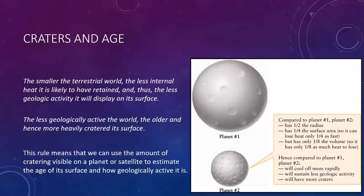We'll finish off this lecture with a couple slides discussing how we can relate cratering on a surface to the age of a planet. And this is quite fascinating. It turns out that the smaller the terrestrial world, the less internal heat it is likely to have retained, and thus the less geological activity it will display on its surface. The less geologically active the world, the older and hence more heavily cratered its surface. This rule means that we can use the amount of cratering visible on a planetary surface to estimate the age of its surface and how geologically active it is. This is a very important idea.